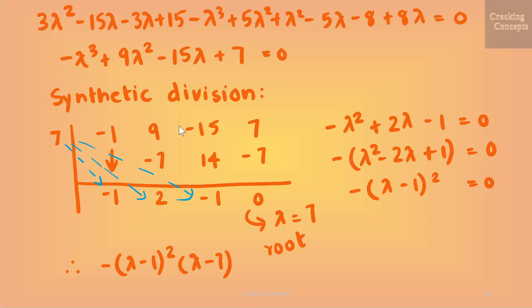For the synthetic division, we write the coefficients of all the terms and write the number to be checked, which is 7, on the left-hand side. We start by copying the first element and multiply 7 by −1 to get −7, add these two to get −1, then multiply 7 by −1 to get −7, add to get 0. Since the remainder is 0, 7 is a root of this polynomial. The remaining coefficients give the quadratic equation −λ² + 2λ − 1 = 0, with roots (λ − 1)(λ − 1). Therefore the characteristic polynomial is −(λ − 1)²(λ − 7).